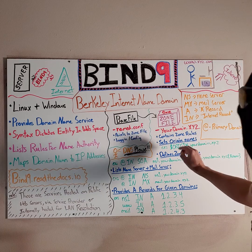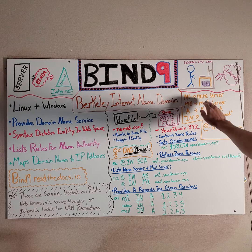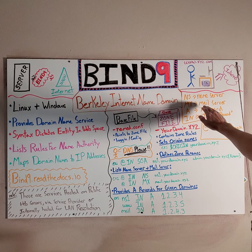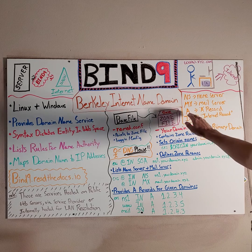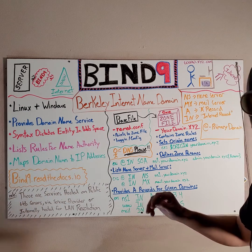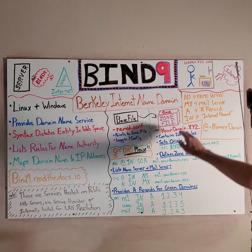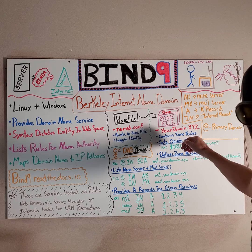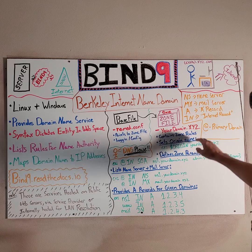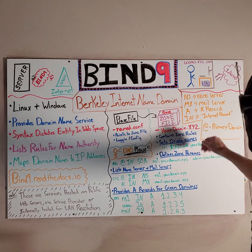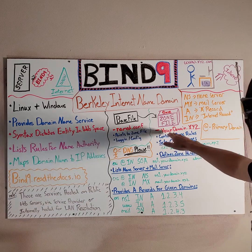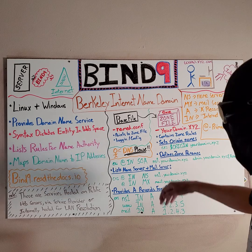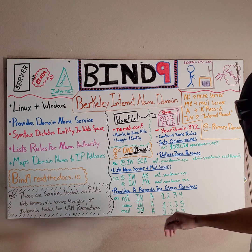One thing to note here: NS in these examples stands for name server. MX stands for mail server. The A is an A record. IN is basically internet. And the at symbol just represents your primary domain — in this case, your domain.xyz for our example domain.